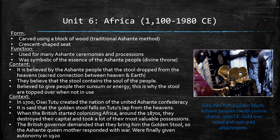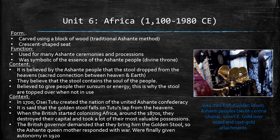For Unit 6, I chose the Golden Stool from the Ashanti Civilization. The Golden Stool is made around 1700 CE from gold over wood and cast gold attachments. It is believed that when Osei Tutu unified and created the Ashanti nation in 1700, the Golden Stool fell from the heavens and is believed to house the soul of the Ashanti people. The symbolic meaning of the stool is so important to the civilization that it is mounted on its own stool, as it is too sacred to touch the ground, and is the connection between the heavens and earth. The stool is also so sacred that the Queen Mother responded with war when the British attempted to take it. Because this stool is a symbol of the essence of the Ashanti people and is so important to their culture, this qualifies as a symbol of the Ashanti people's identity.